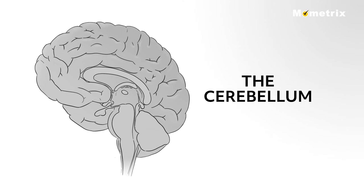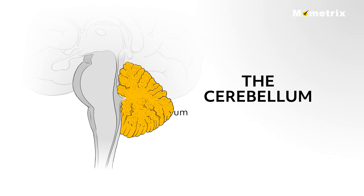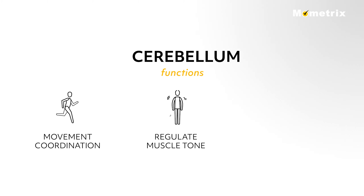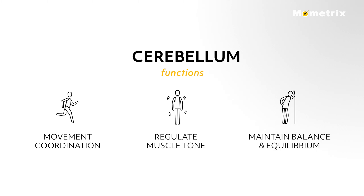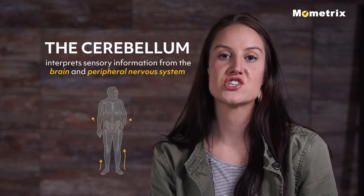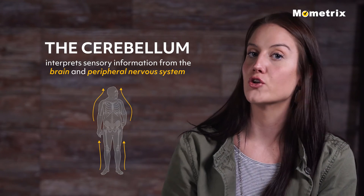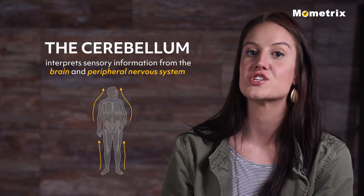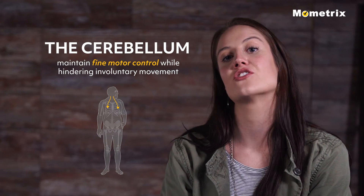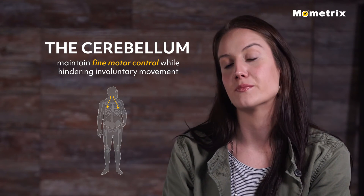The cerebellum is the area of hindbrain that is located under the cerebrum. Its function is to control movement coordination, regulate muscle tone, and maintain balance and equilibrium. The cerebellum interprets sensory information from the brain and peripheral nervous system, which allows it to maintain fine motor control while hindering involuntary movement.